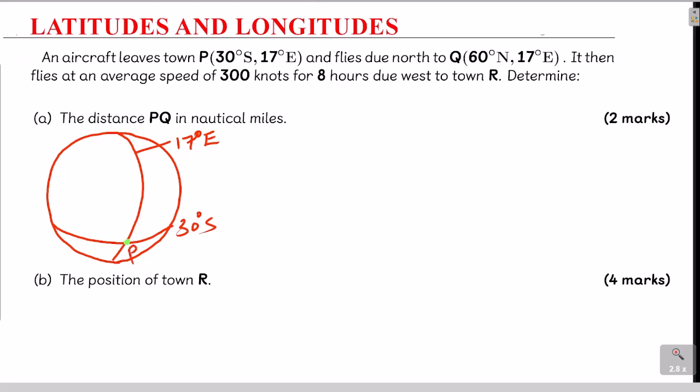Q is at 60 degrees north, 17 degrees east. The aircraft then flies due west to town R. Due west means directly west along the same latitude, so R shares the same latitude as Q, but we don't yet know its longitude.